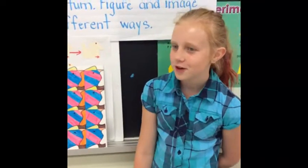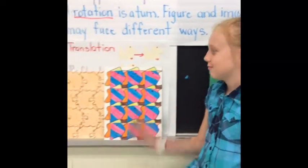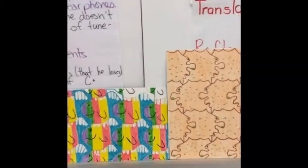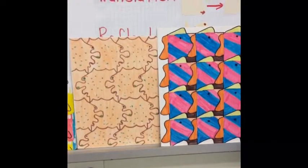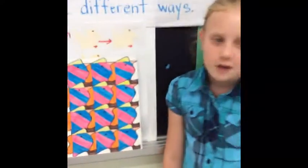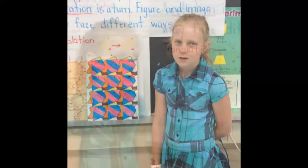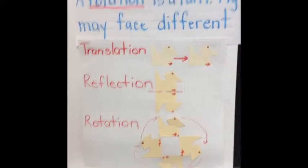This week we learned about tessellations and tiling patterns, and these are some examples. Tiling patterns are when you take a shape and it interlocks like a puzzle, and then there are no gaps or holes in between each shape.